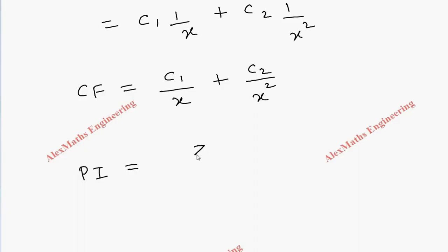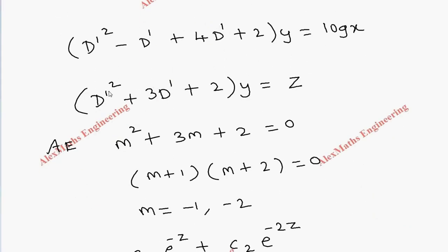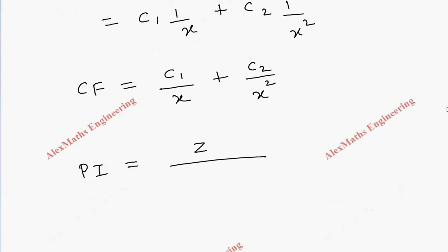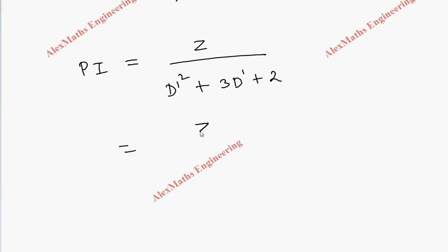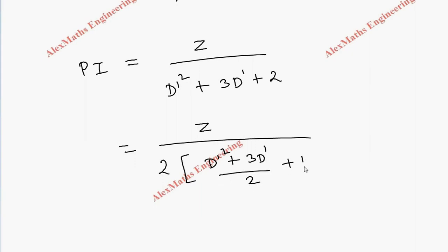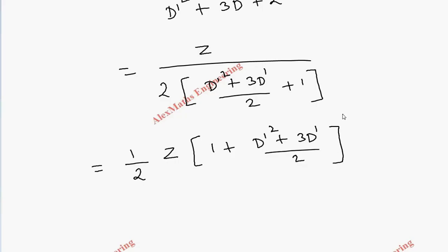Coming to the particular integral, we have z divided by the operator D dash squared plus 3·D dash plus 2. We take 2 common from the denominator, giving 1 over 2 times 1 over (D dash squared plus 3·D dash)/2 plus 1. Carrying this term to the numerator: 1/2 · z · (1 plus (D dash squared plus 3·D dash)/2) power minus 1.